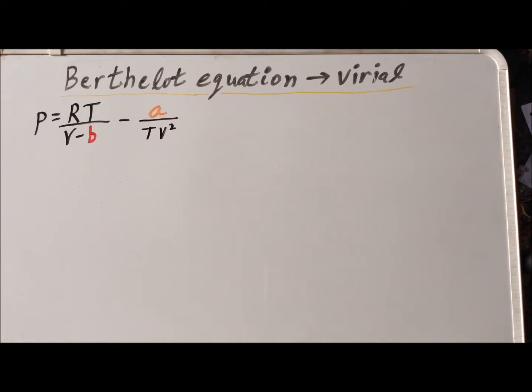We recall the Berthelot equation where the pressure is equal to RT divided by the volume V minus this parameter small b minus A divided by T v squared, where A is a second parameter of the equation, and A and B fill roles similar to the constants A and B in the van der Waals equation.